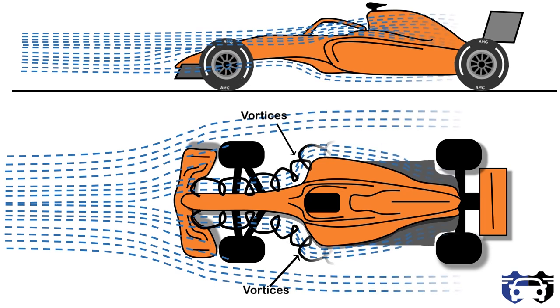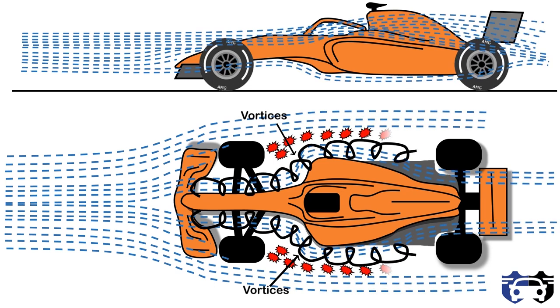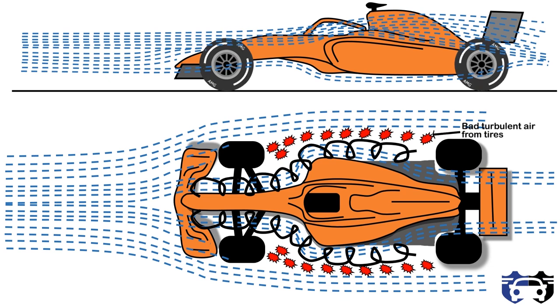These vortices will club the air and direct them along the body of the car, because of which we will have better pressure distribution at the rear and also good downforce. These vortices also help in keeping the turbulent air from the tire away from the good streamlined air. So this is how the spoiler or the front dam of a car works.